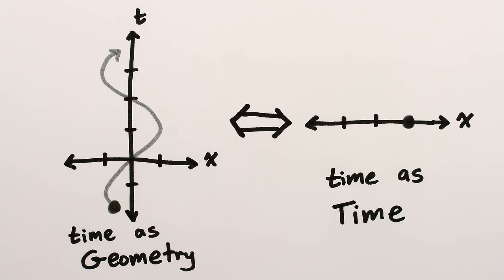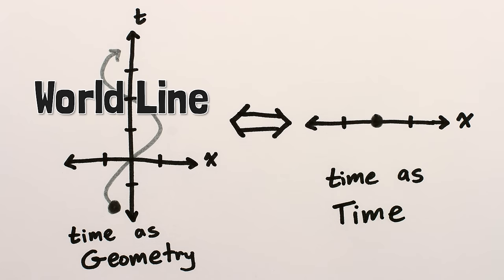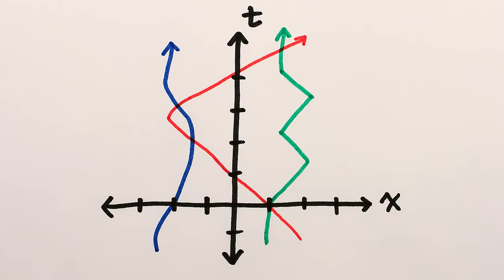And these paths are called world lines, presumably because they show where in the world the object has gone, though by world we often mean room, or solar system, or universe. Any particular point on a world line has coordinates t and x, which we write as a pair, telling us for time t what position the object was located.